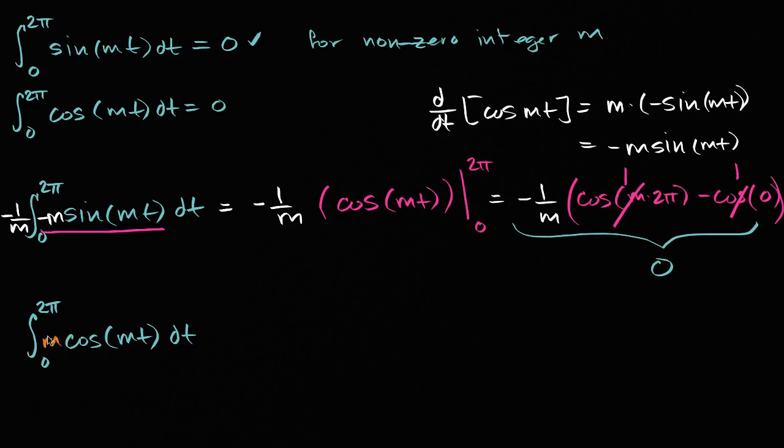I'm gonna multiply by an m and divide by an m, not changing the actual value. And so this is going to be equal to one over m. And then the anti-derivative of that right over there, the anti-derivative of this right over here is sine of mt. So sine of mt. Notice the derivative of sine of mt is m cosine mt.